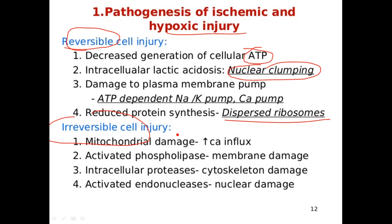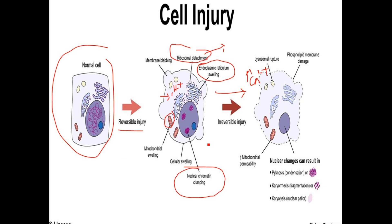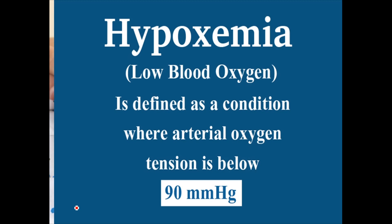In irreversible cell injury: the mitochondria are damaged, calcium influx increases, and activated phospholipases lead to membrane damage. Intracellular proteases cause cytoskeletal damage, and activated endonucleases cause nuclear damage. To summarize: reversible injury shows membrane blebbing, ribosomal detachment, ER swelling, nuclear chromatin clumping, and cellular and mitochondrial swelling. Irreversible injury involves lysosome rupture, phospholipid membrane damage, and nuclear changes including pyknosis, karyorrhexis, and karyolysis, plus increased mitochondrial permeability.